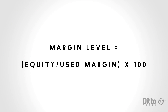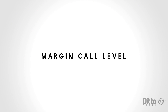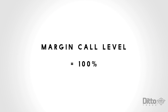Usually brokers will set this as a limit of 100%, which is called a margin call level. When your account margin level reaches 100%, you can still close your open trade positions but you cannot take any new positions. This occurs when your account equity is equal to the margin, which can happen when you have one or multiple losing positions and your trades are losing continuously and quickly.